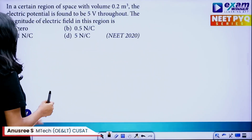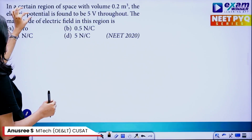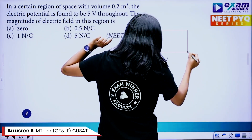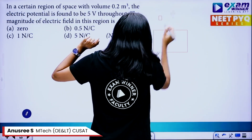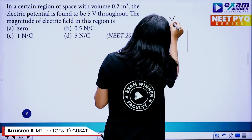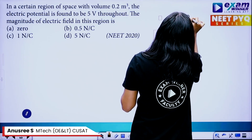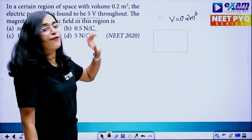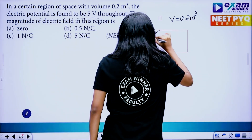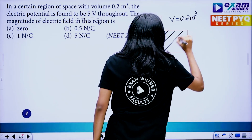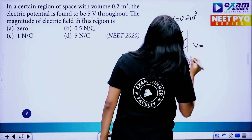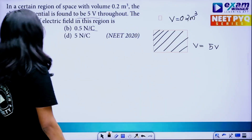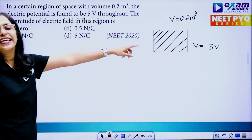In a certain region of space with volume 0.2 m³, there is a surface. The electric potential is found to be 5V throughout the surface. What is the magnitude of the electric field in this region?